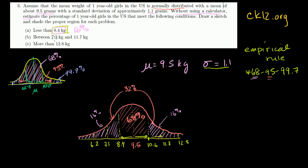Part B: the probability of being between 7.3 and 11.7 kilograms. That's two standard deviations below the mean and two standard deviations above the mean. They're essentially asking for the probability of a result within two standard deviations of the mean. The empirical rule gives us that answer directly: 95%.